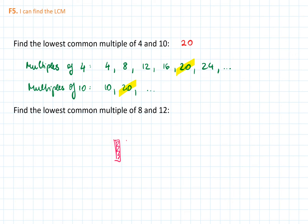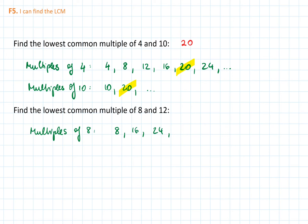Do I need to go any further? I don't need to go further because I spotted that 20 is in both lists. Therefore 20 is the lowest common multiple of 4 and 10.